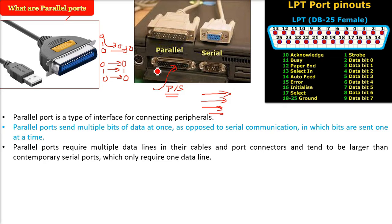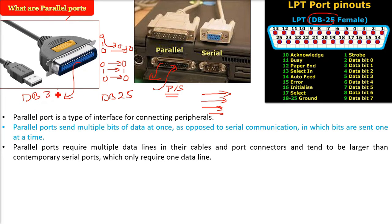Here I am showing you the DB25 parallel connector and also the 36-pin connector, which is also called the Centronics port. In the Centronics port, bits 0 to 7 are dedicated for data bit transfer, which is very important.